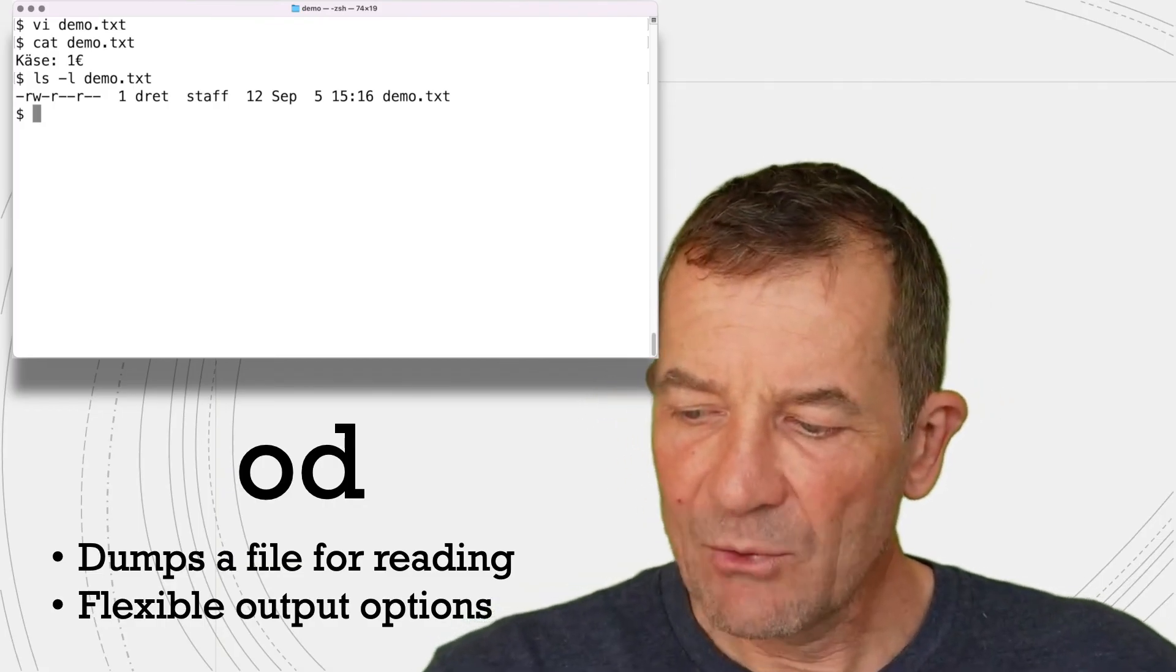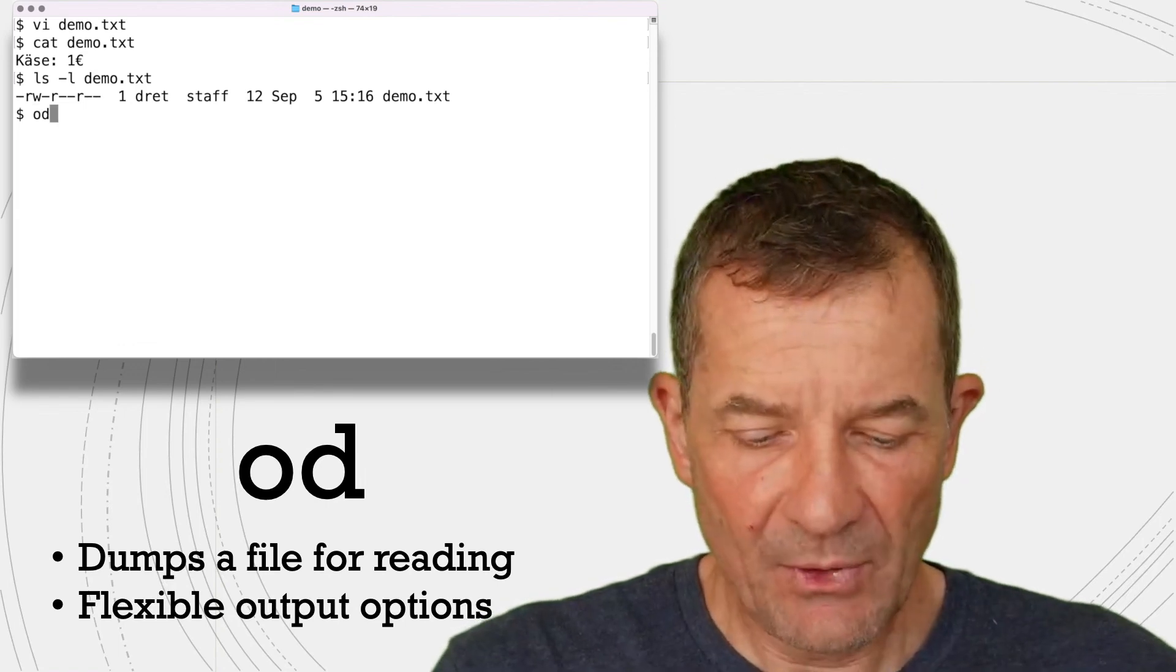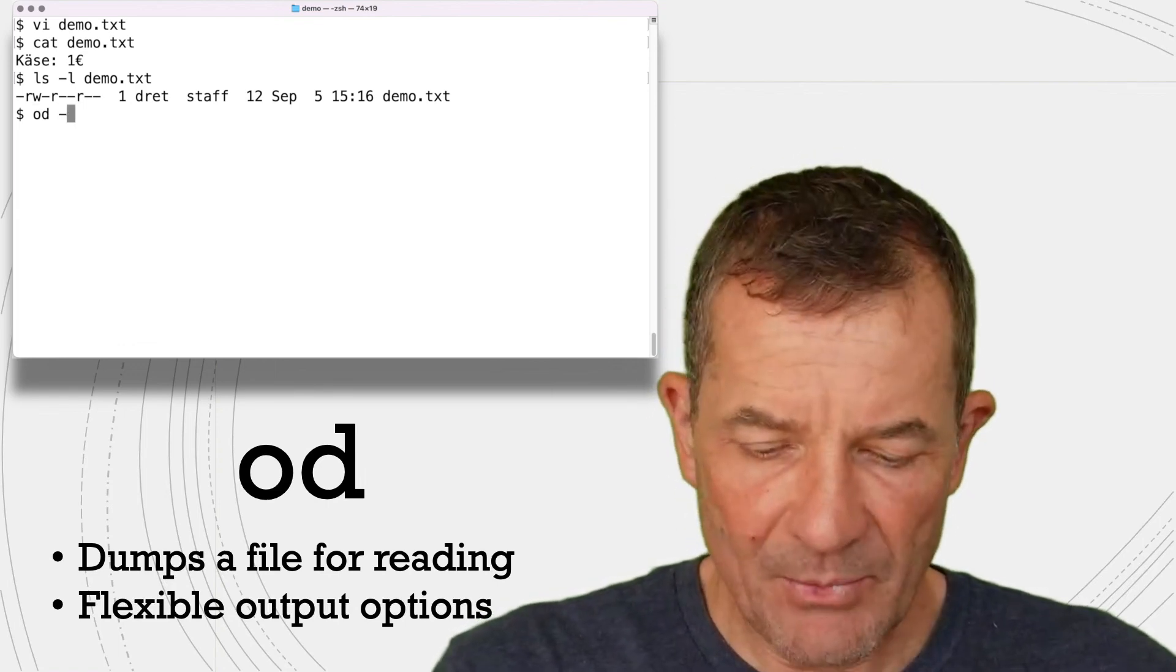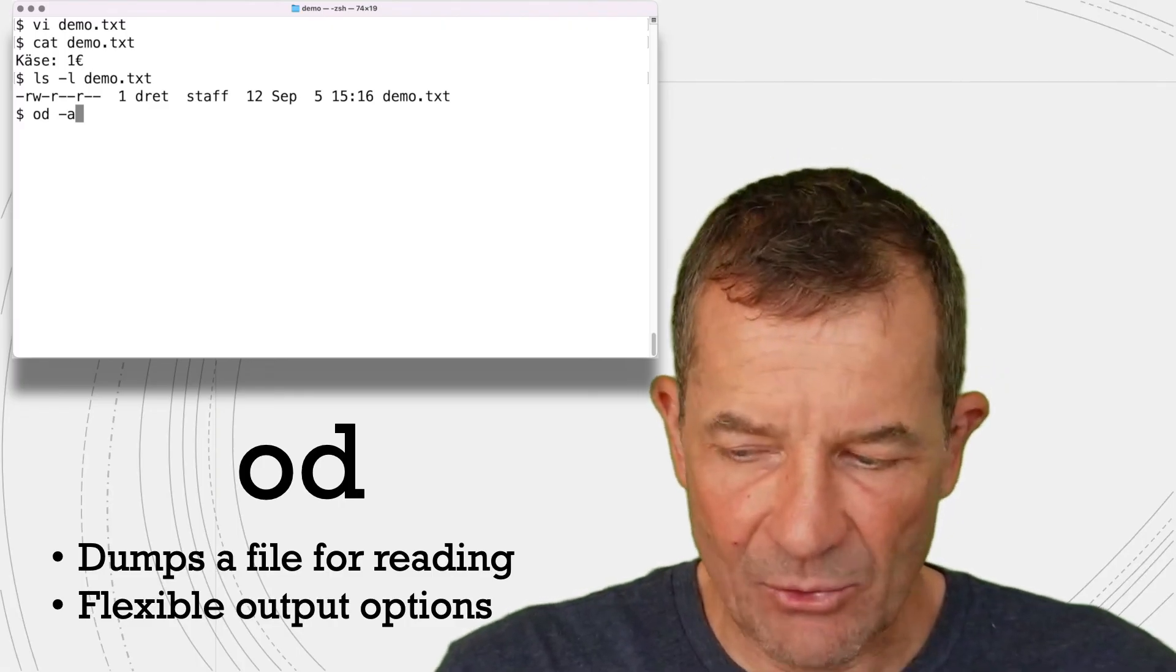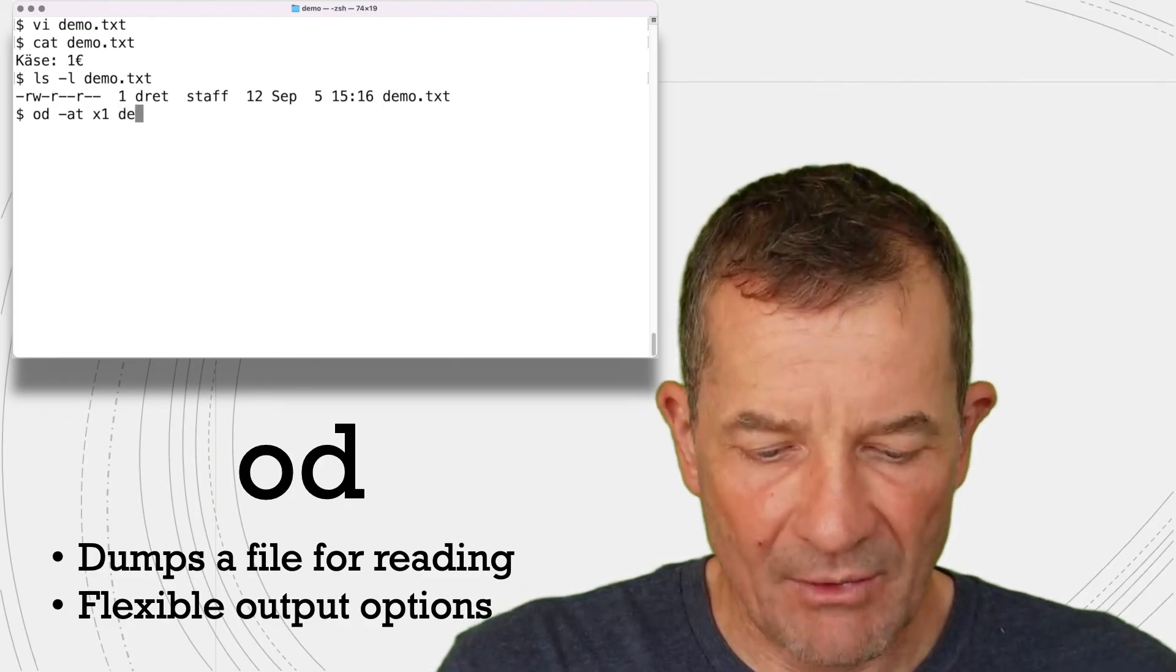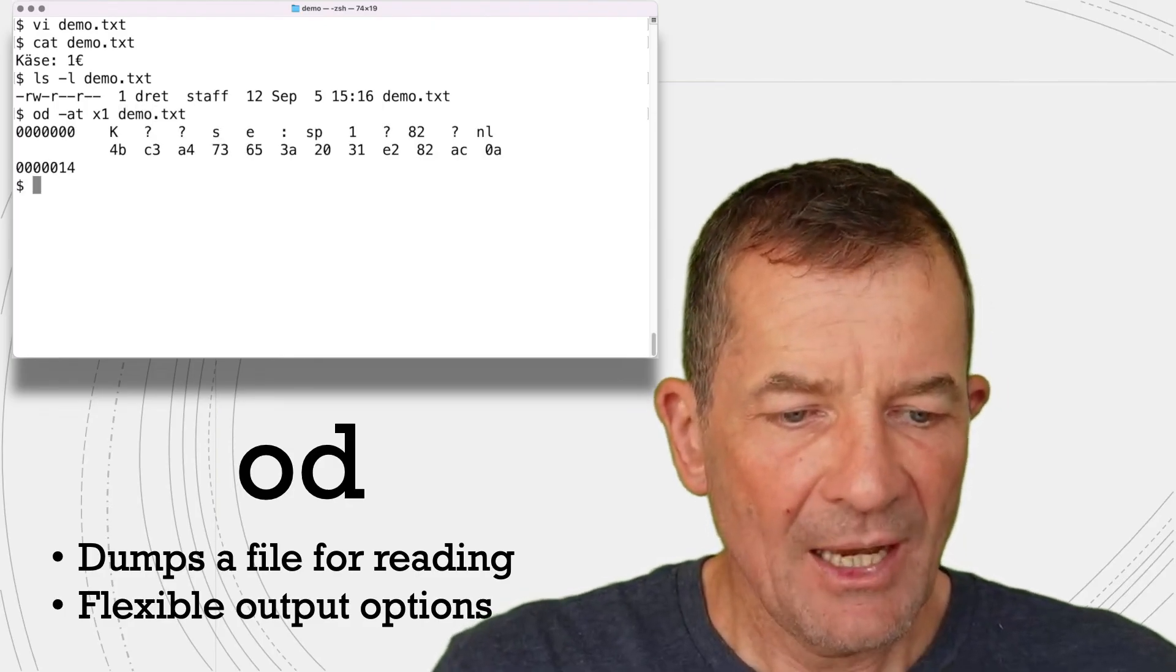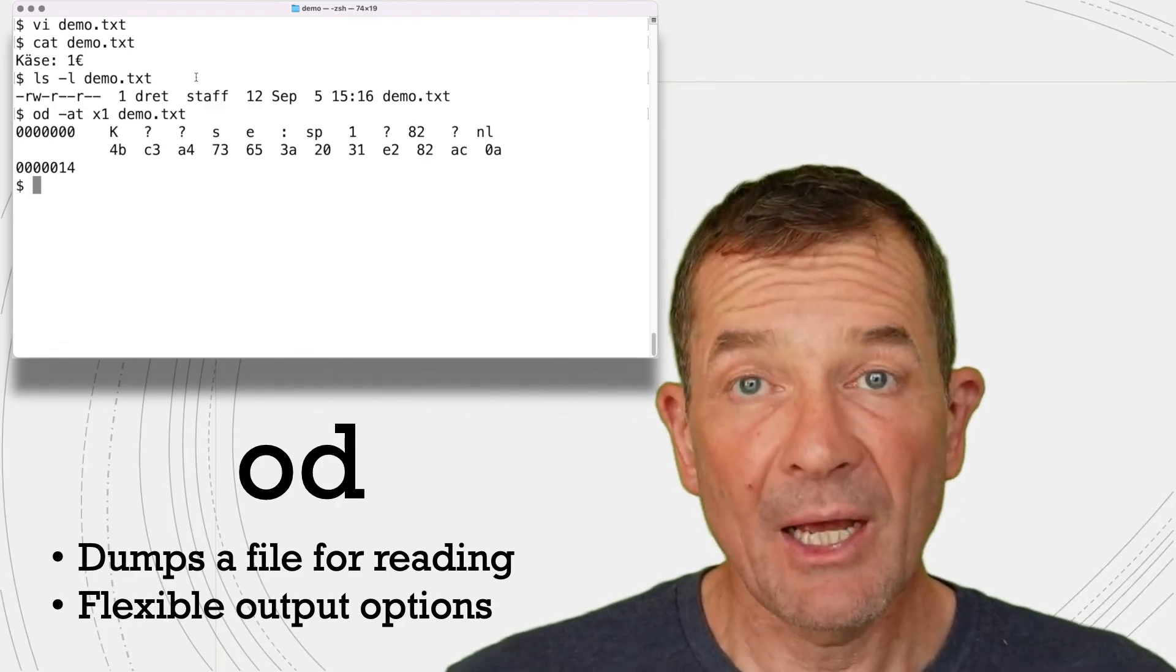In order to find out why that is the case, we can use a simple utility, which I think is very useful, which is called od for octal dump. And we tell it to please show us ASCII character values and to please also show us the hexadecimal values of the bytes that it's showing. And we do that.